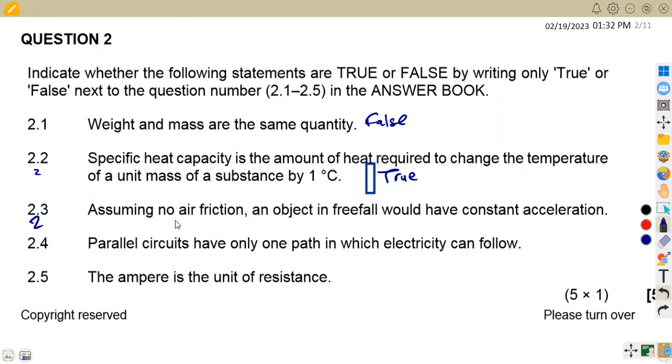Assuming no air friction, an object in free fall would have constant acceleration. If there is no air friction, this is true. This is a repetition - if you check these questions from another paper, we had this question.